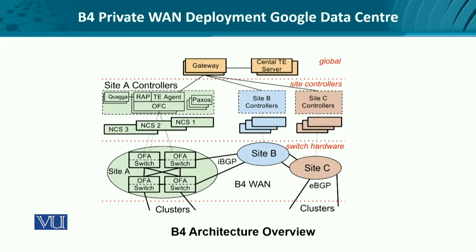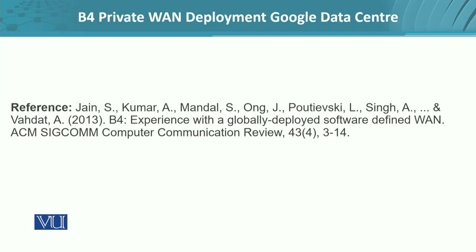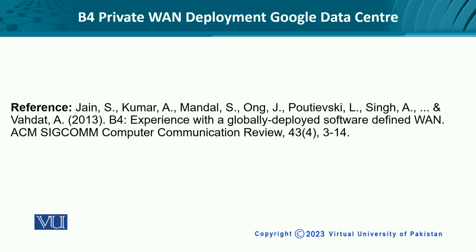Visually, we can see we have the switch hardware layer, the site controllers, and the global layer. At the site controllers, there is an open-source Internet operating system known as Quagga. Then we have the routing agent, proxy, and traffic engineering agent. All these provide directives to the OpenFlow-enabled agent, which configures the switches correspondingly at their respective sites. The reference taken is from a 2013 paper on experience with a globally deployed SDN software-defined WAN, published in the prestigious ACM SIGCOMM Computer Communication Review.